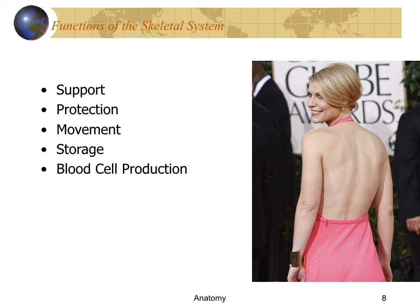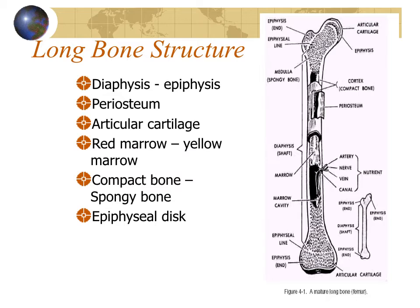The skeletal system functions to provide support, provide protection, and act as the levers which produce movement when muscles act upon them. Bones store calcium, phosphate, and fat, and are involved in blood cell production. A long bone contains a hollow shaft called the diaphysis; at either end where it articulates is an epiphysis reinforced with spongy bone. The periosteum is a fibrous membrane surrounding the bone surface, containing cells for repair. The medullary cavity contains yellow marrow (fat), while spaces in spongy bone contain red marrow where blood cells are produced.